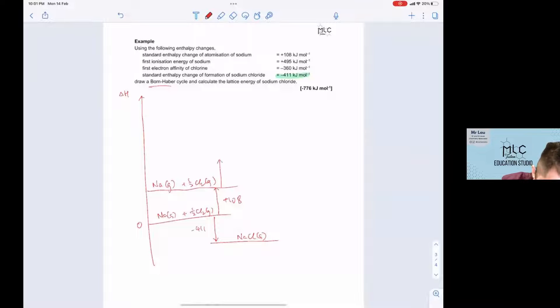Next, let's atomize the chlorine. So it's sodium gas and chlorine gas. Now, they did not give us any atomization of chlorine data. So we will just have to use the bond energy values instead. So this will be half bond energy of chlorine. So let's just take a look at the data booklet to find out the bond energy of chlorine. So this will be plus 122. It's half of it.